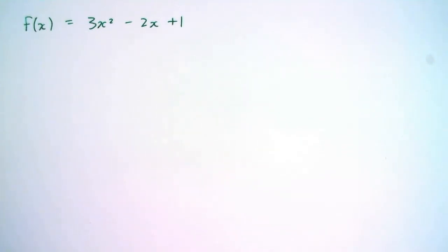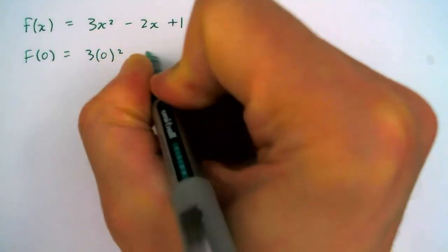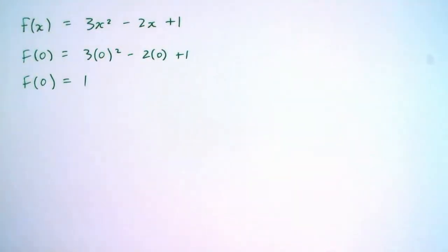So here are some things you can do with function notation. If f of x is this quadratic function, then f of 0 is 1.